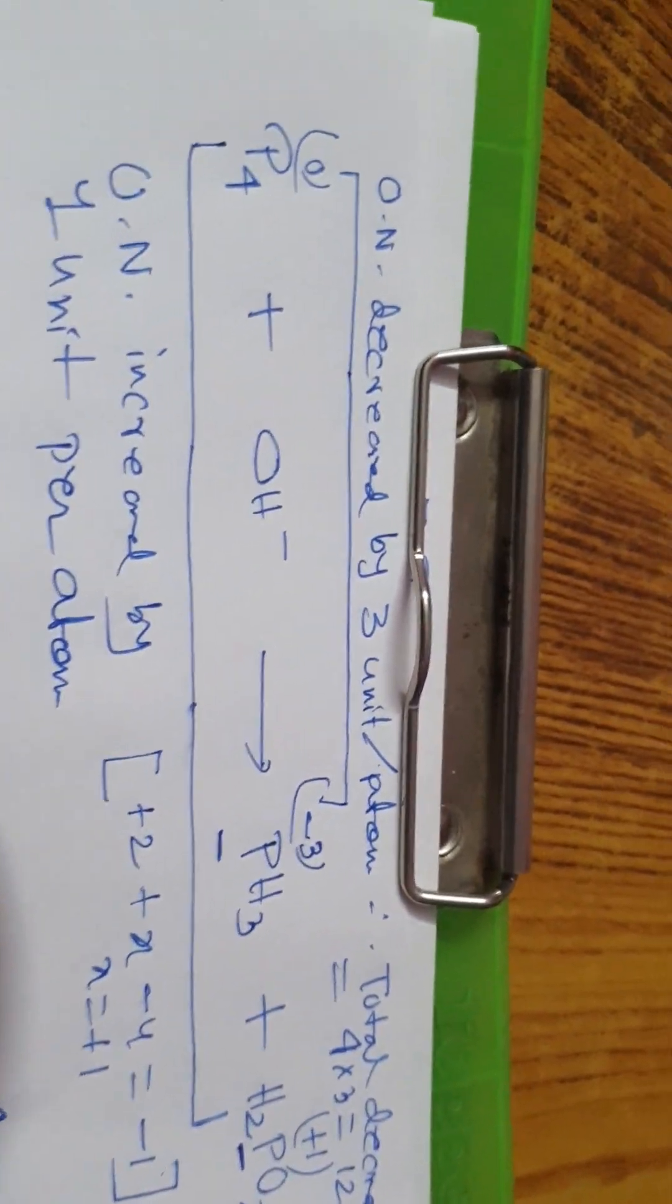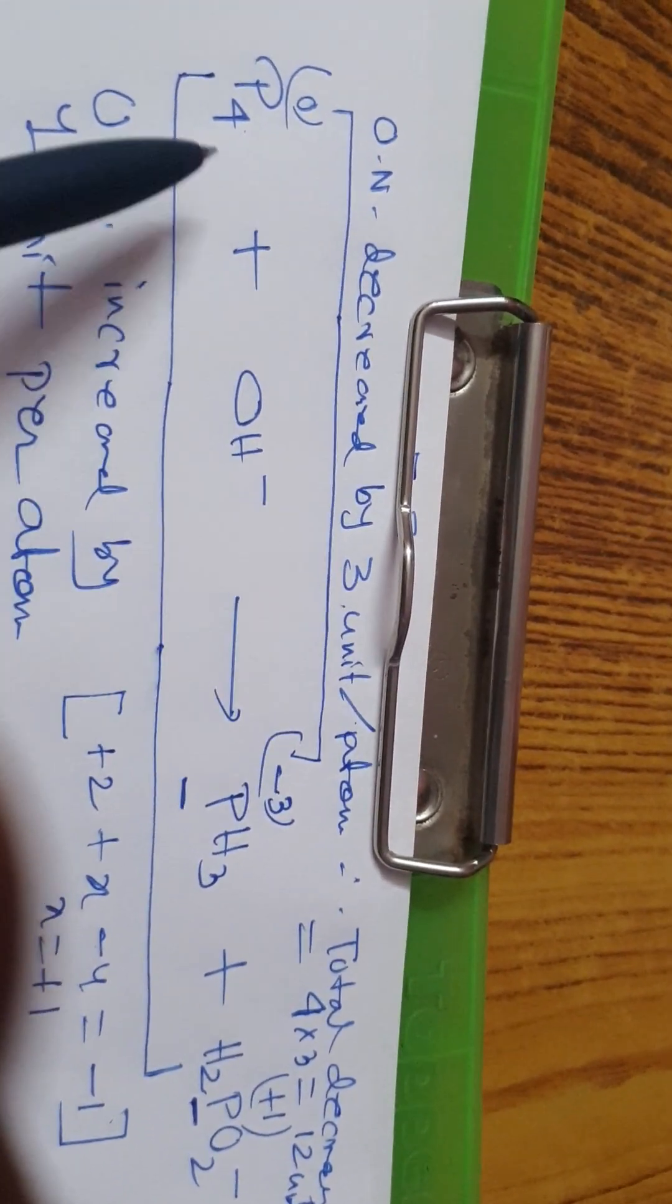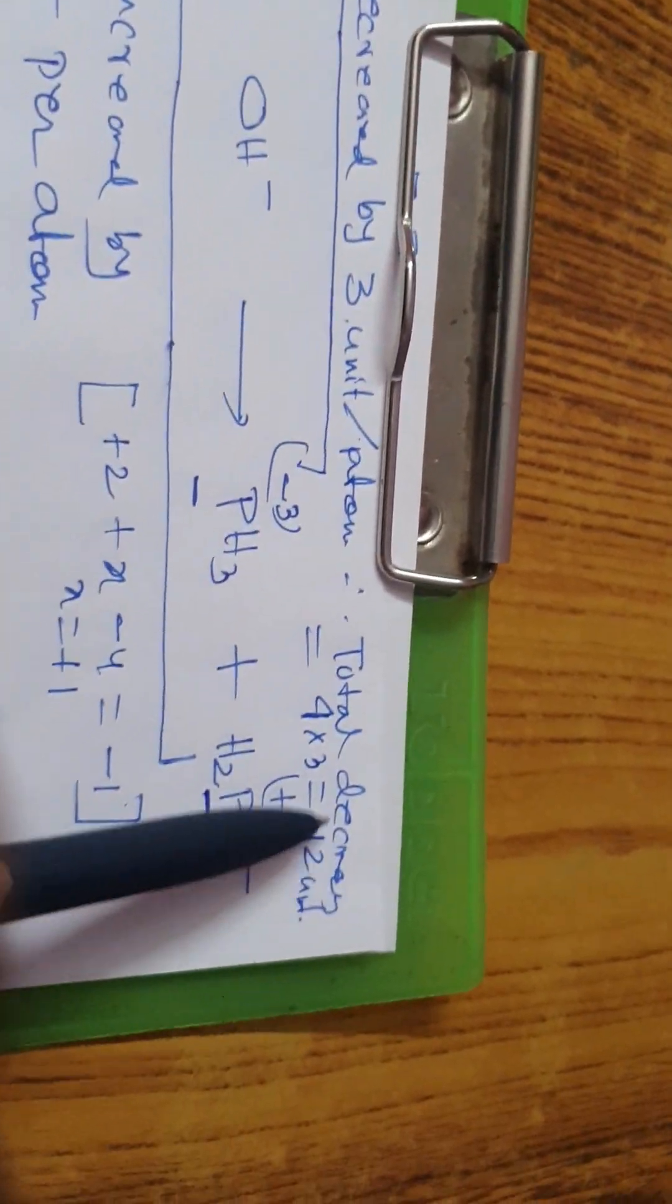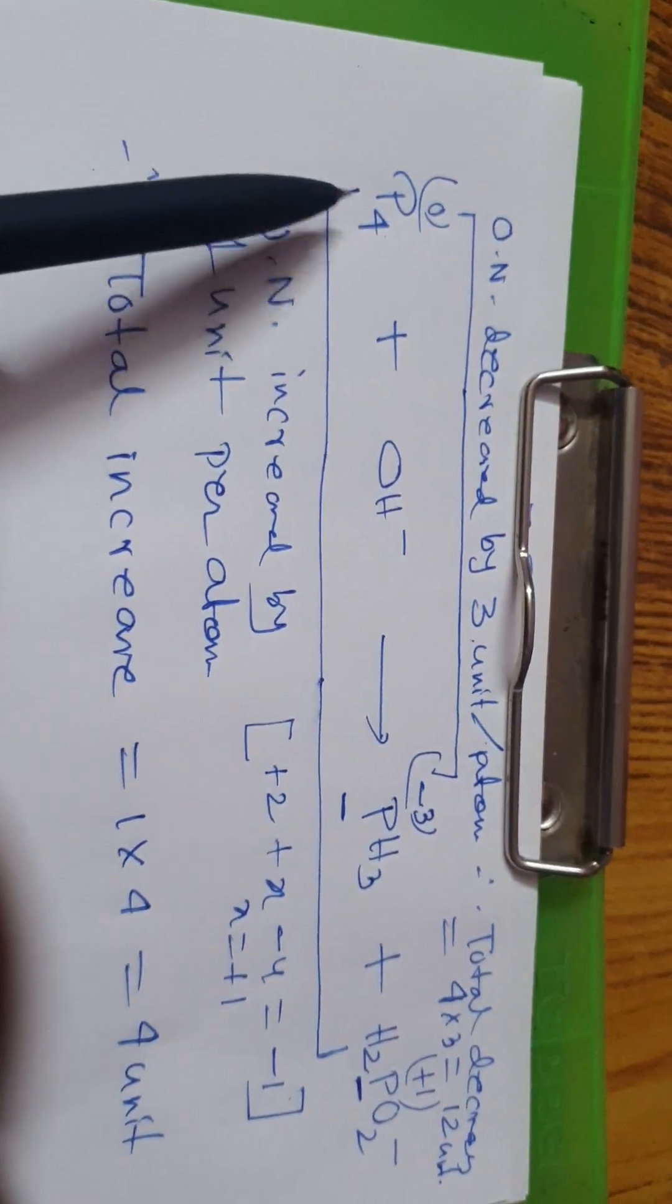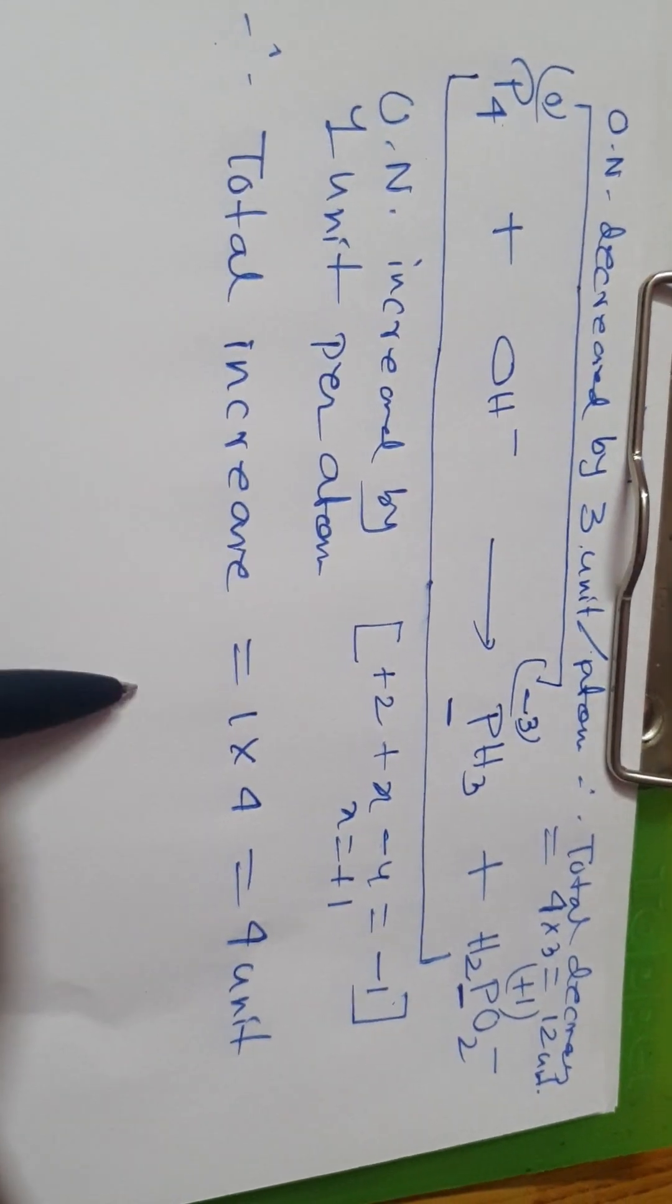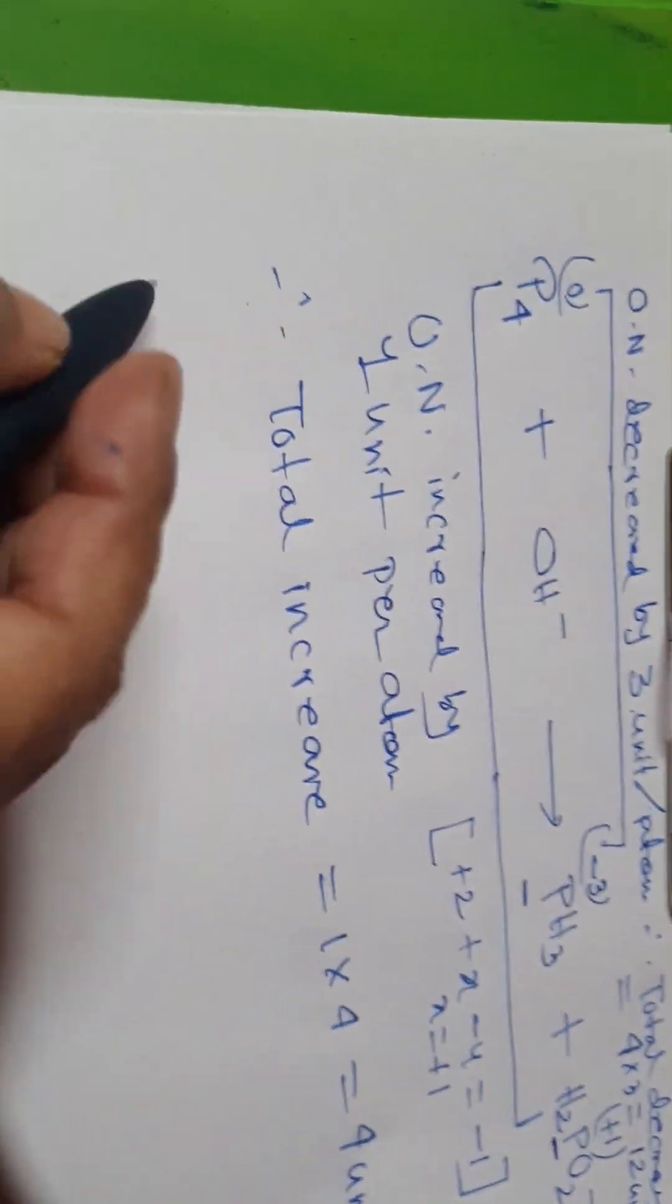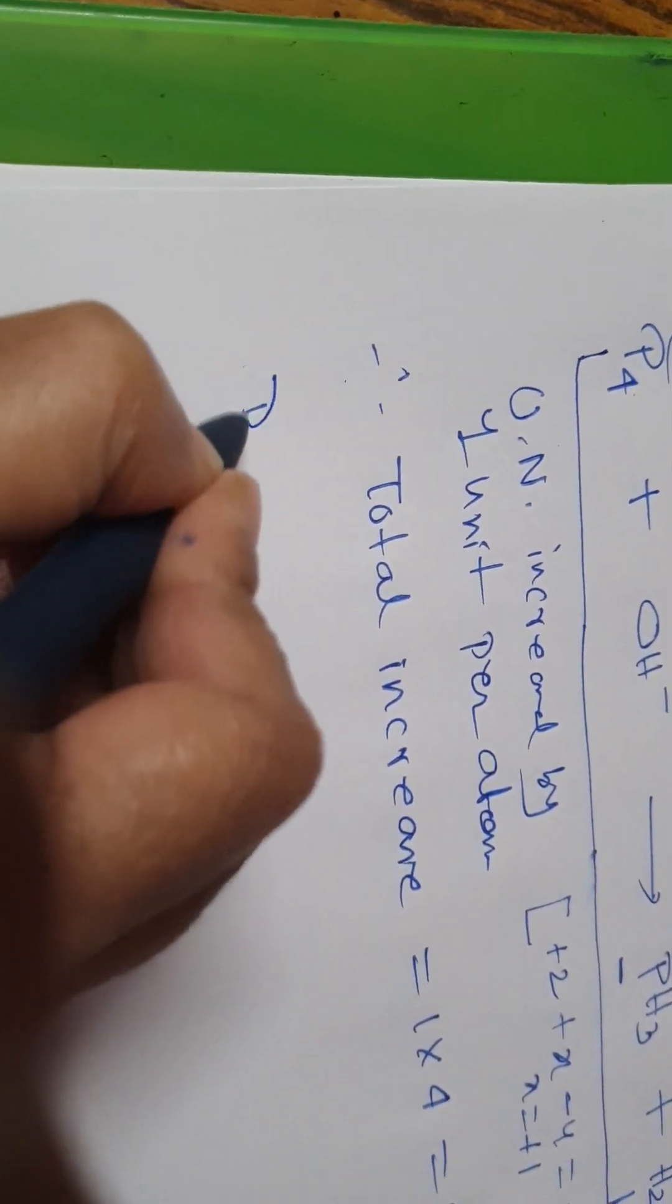Now, 0 to minus 3, that is oxidation number decreased. Oxidation number decreased by 3 unit per atom. Per atom, so total decrease equal to 4 into 3, that is equal to 12 unit. Total decrease is 12 unit. One atom has 3 unit decrease. There are P4, 4 atoms are here. So 4 into 3 gives 12 unit. One unit increase, there are 4 atoms, so 1 into 4 is 4 unit.